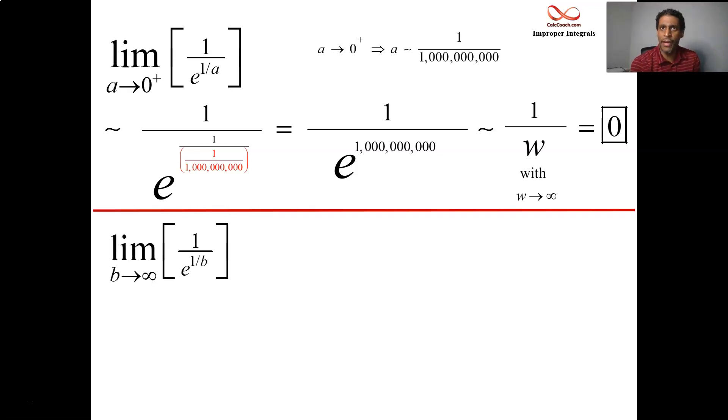For the other one, we have one over E to the one over B. And B is getting very large. So like above, let's plug in something very large. So in my brain, I'm going to plug a billion in. And so you're going to replace the B with a billion. So this is going to be similar to one over E to the one over a billion. One over a billion is very small. And I can get even smaller by using something more than a billion. So that exponent is going to zero. But E to the zero is going to be a one. And so that's why the second limit is one.